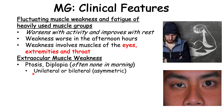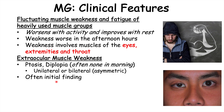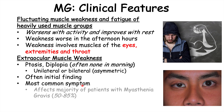The ptosis can be unilateral or bilateral. If it is bilateral, both eyelids would be drooping, but oftentimes it's going to be asymmetric, meaning one droops more than the other. These eye findings — ptosis and diplopia — are often the initial findings of myasthenia gravis and are the most common symptoms.